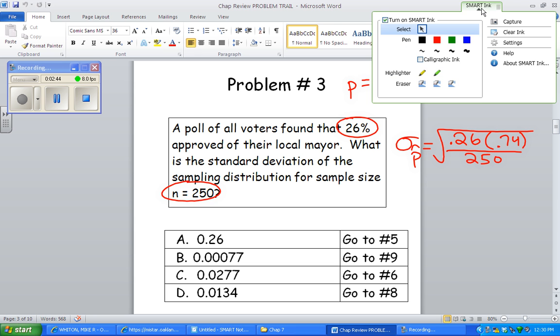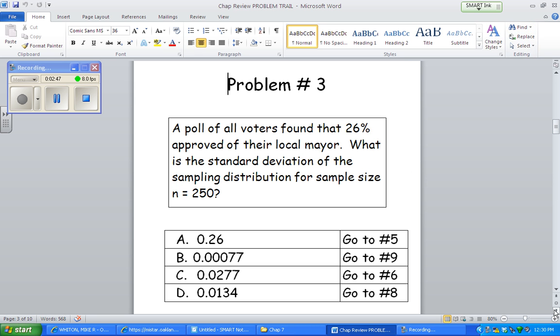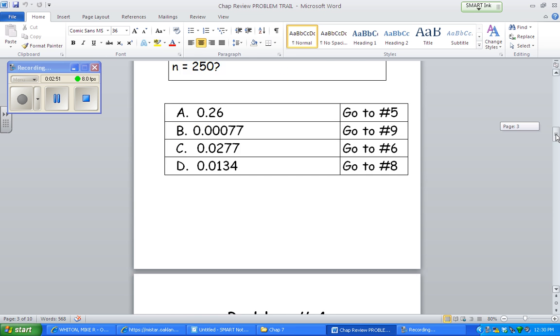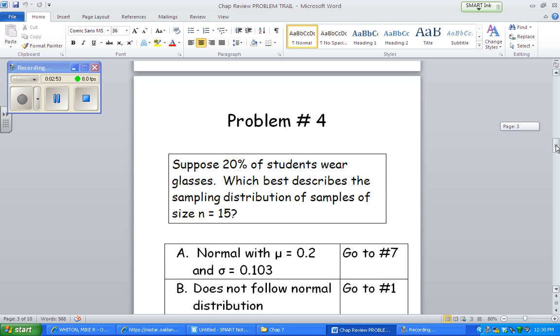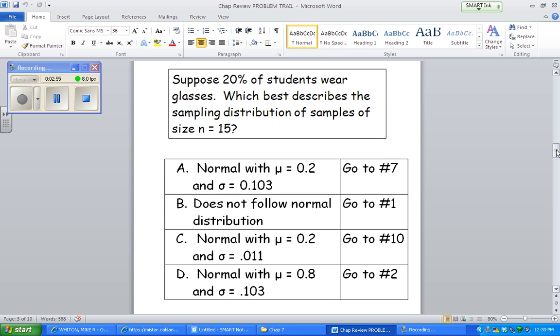Okay, moving along here. Number 4. Let's do this. Suppose 20% of students wear glasses. Which best describes the sampling distribution? So, again, this is proportions. Okay, they're giving you a percentage. So, P is given as 0.2 or 0.20. And n is given as 15.